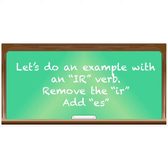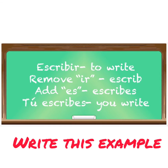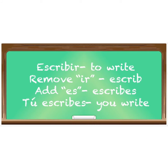Now let's do an example with an -ir ending verb. All we're going to do is remove the -ir and then add -es to the end of the verb. The -ir ending verb 'escribir' means 'to write.' When we remove the -ir we end up with 'escrib,' then we add -es and get 'escribes.' So the answer is 'tú escribes.'